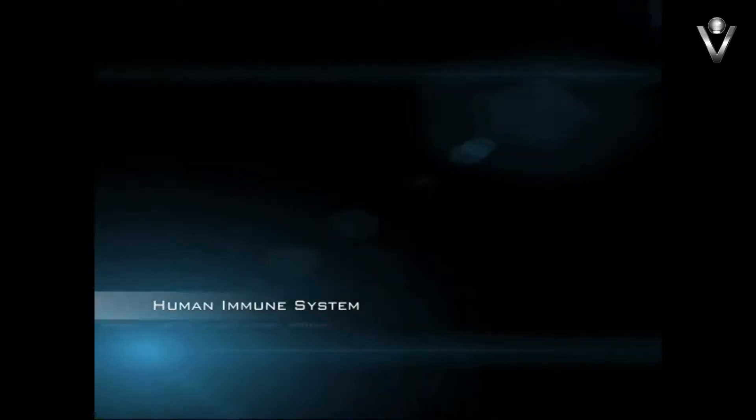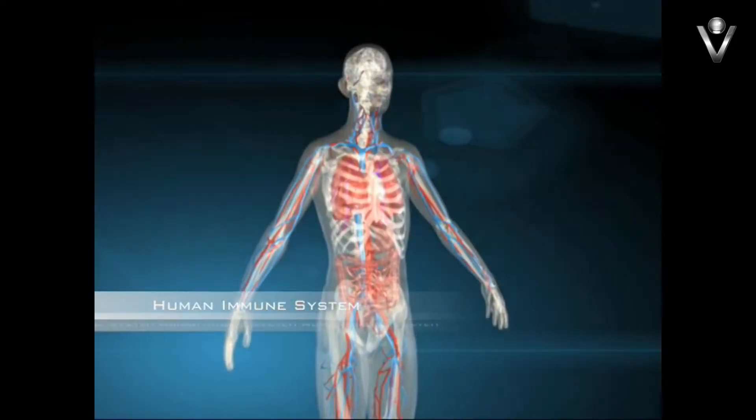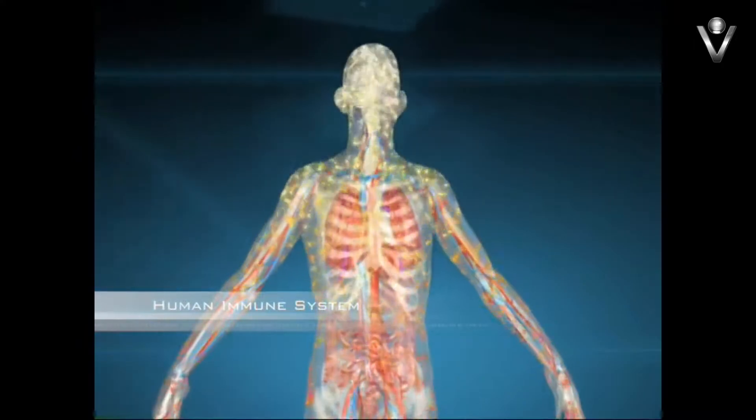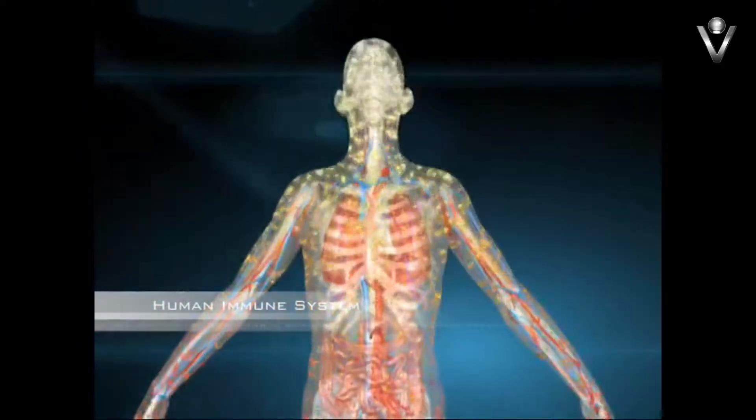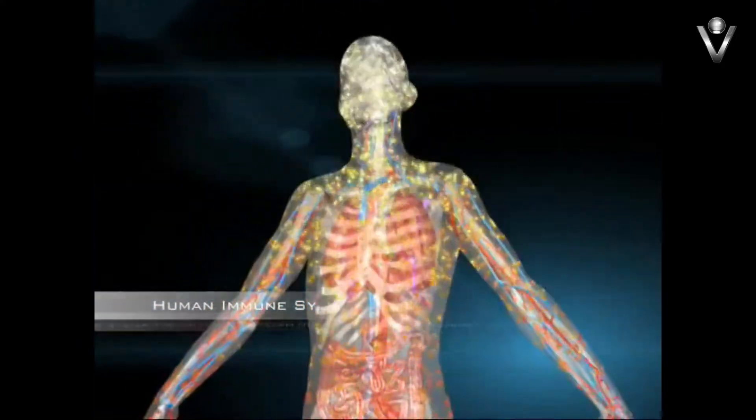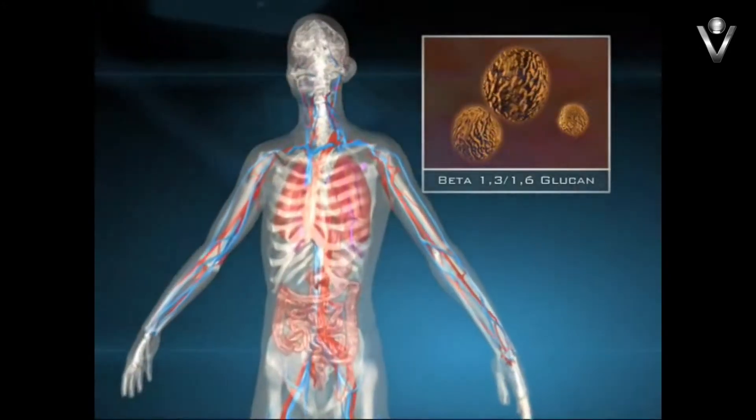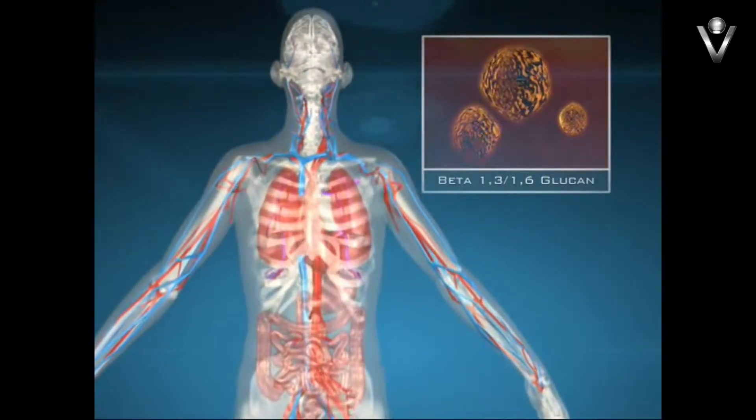The human immune system is a highly complex network of trillions of immune cells that protect the body from constant exposure to pathogens and disease. A.J. Lanigan is developing patented beta-glucan compounds that significantly enhance the immune system to fight a wide range of diseases.